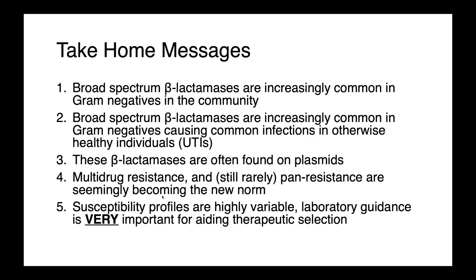The take-home messages from this lecture are that broad-spectrum beta-lactamases are increasingly common in gram negatives in the community — not just in hospital settings — and increasingly common in organisms causing infections in otherwise healthy individuals, including E. coli causing UTIs in healthy women and animals. These beta-lactamases are often found on plasmids, meaning they're mobile and can be transmitted via horizontal gene transfer. Multi-drug resistance — and unfortunately pan-resistance — is becoming more common. Susceptibility profiles are highly variable, so laboratory guidance and susceptibility testing are very important to guide therapeutic selection.